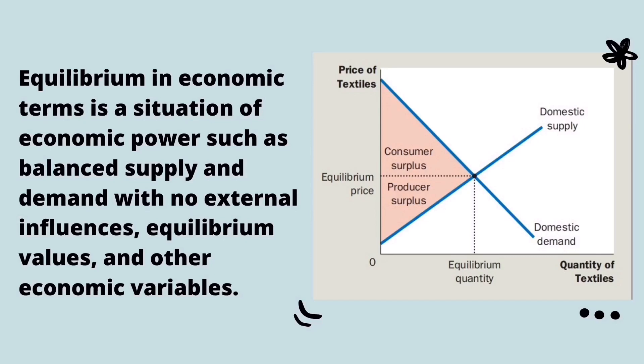The domestic price adjusts to balance the quantity supplied by domestic sellers and the quantity demanded by domestic buyers. The figure shows the consumer and producer surplus in the equilibrium without trade. The sum of consumer and producer surplus measures the total benefit that buyers and sellers receive from participating in the textile market.